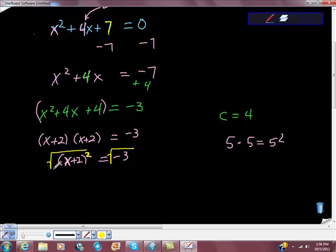When I do that, the square root of (x+2)² is just x+2. The square root of negative 3 is i times the square root of 3.